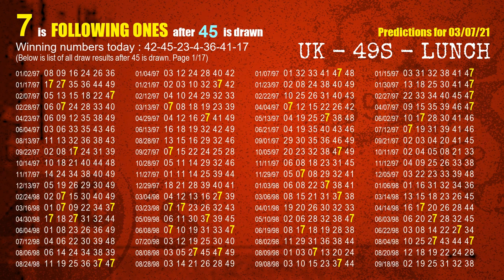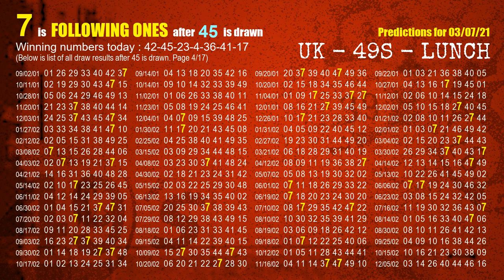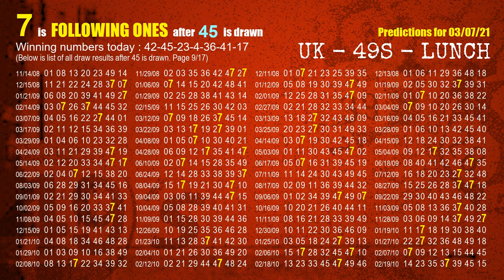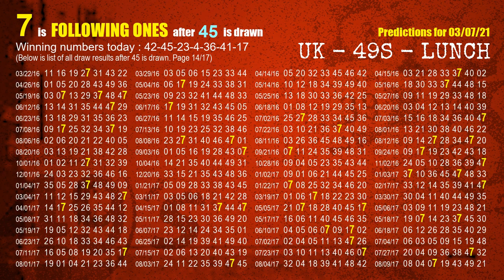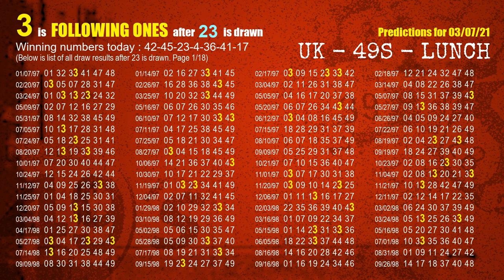The second winning number is 45. The most frequently following units digit is 7 when 45 is the winning number in the last draw. The third winning number is 23. The most frequently following units digit is 3 when 23 is the winning number in the last draw.